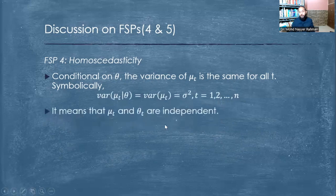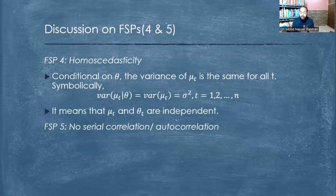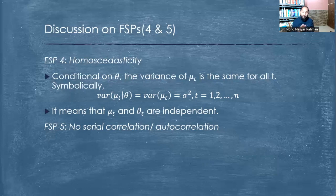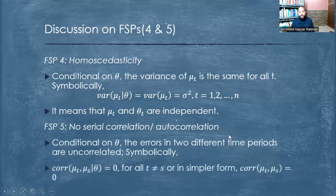FSP5 is no serial correlation or autocorrelation. This problem is generally found in time series data, while FSP4 (homoscedasticity) is significant for panel data. No autocorrelation means past and present values are not impacting each other — for example, 2009 GDP should not be affecting 2010 GDP, or if it is, we try to nullify that effect in order to find the true impact of the current sample.